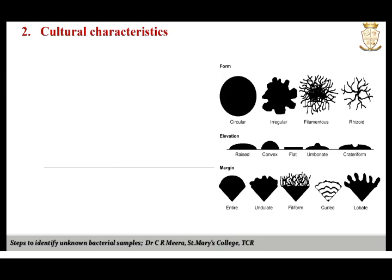Microorganisms produce different growth patterns and characteristics when cultivated on a variety of media. These are called cultural characteristics and are used to group organisms into different taxonomic groups. The cultural characteristics for all microorganisms are described in Bergey's Manual of Systematic Bacteriology. For cultivation, basal or supportive media are commonly used; the most commonly used are nutrient agar and nutrient broth.